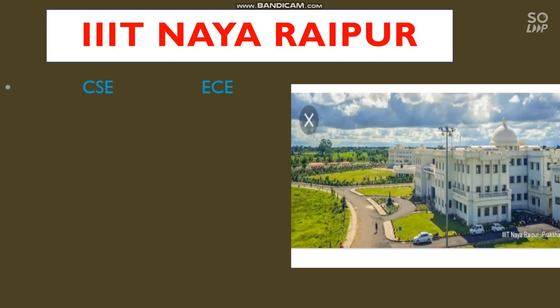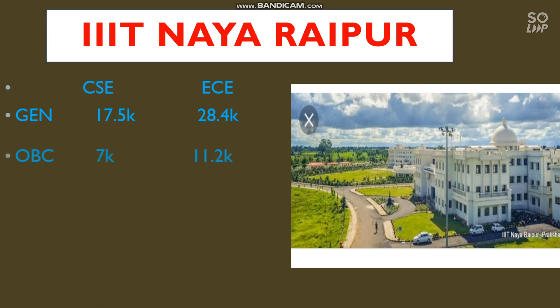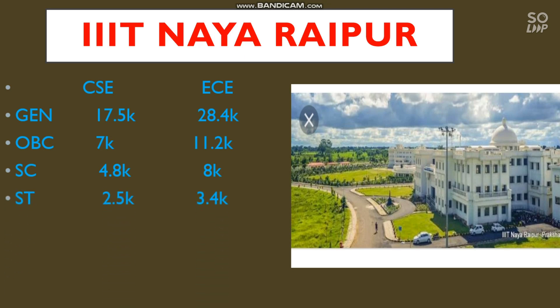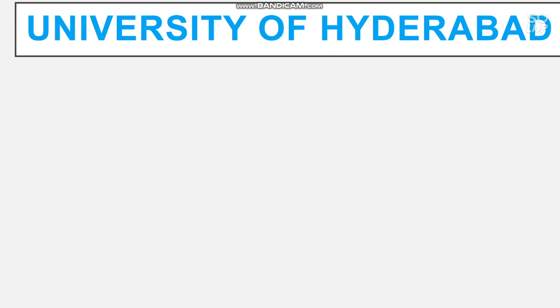Number 4 is IIIT Naya Raipur. Cutoff for CS and EC: General — CS 17,500, EC 28,400; OBC — 7,000 and 11,200; ST — 4,800 and 8,000; EWS — 2,500 and 3,400.